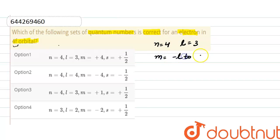minus l to plus l. So values are minus 3, minus 2, minus 1, 0, plus 1, plus 2, and plus 3.